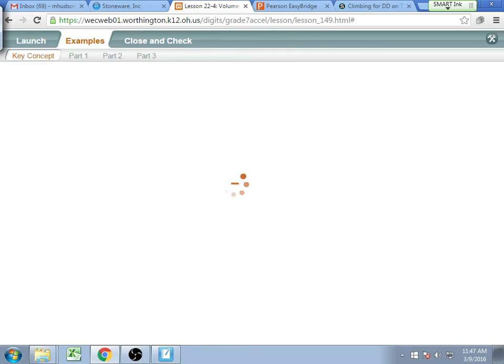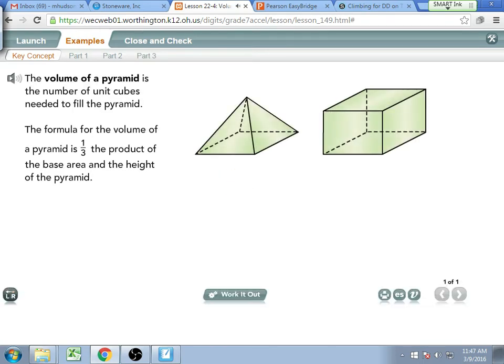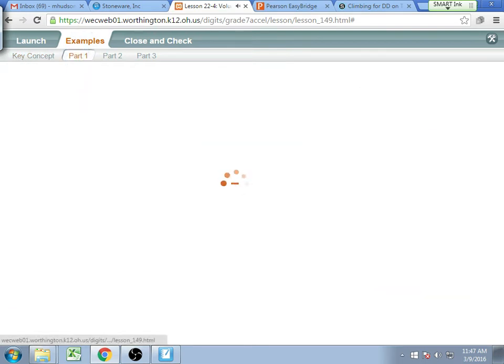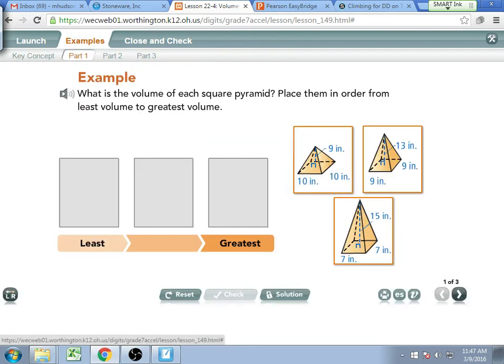So we say that that relationship is going to hold true the entire time. Whenever we have a pyramid, think of what it would be as a prism. And then we can just divide it by three and find our volume that way. So let's dive in here. The key concept essentially goes over the same thing. So I'm going to skip right past that because it covers the exact same thing. So we want to talk about these pyramids. But since we know that each of them would be a third of the prism, think about what it would be as a third of a prism.